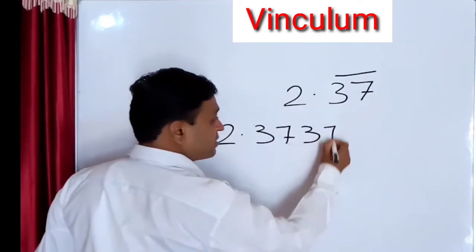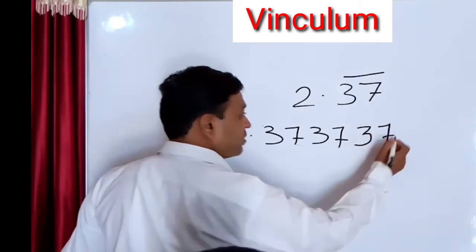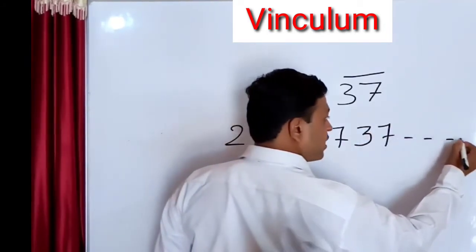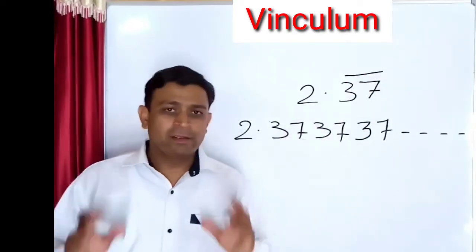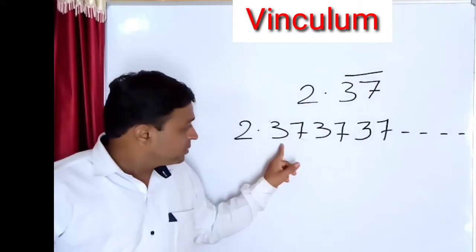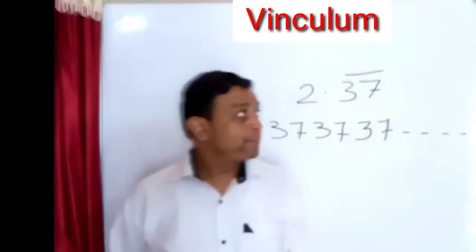It means that 2.37, 3.37, 3.37, 3.37 up to infinity. This means that the bar is on 37, hence after 2.37, 3.37 is repeating up to infinity.